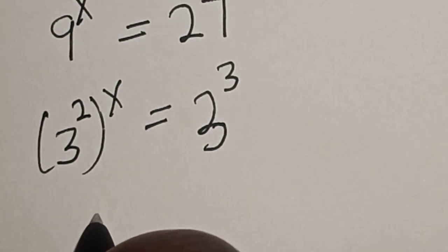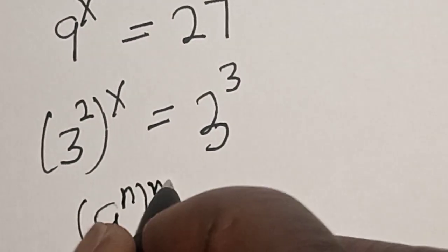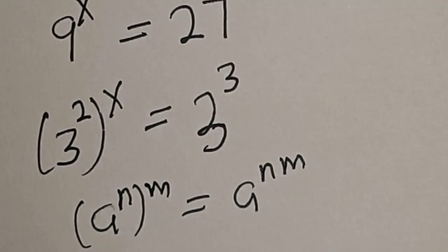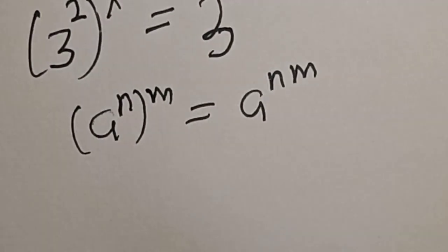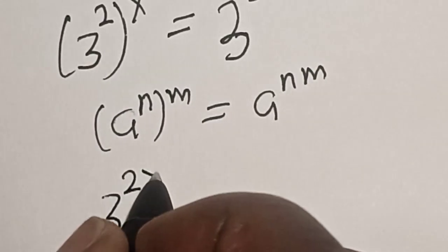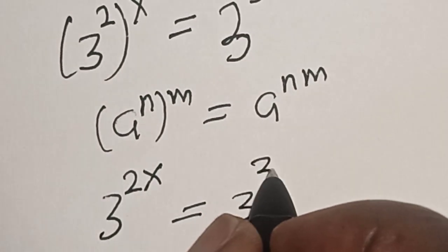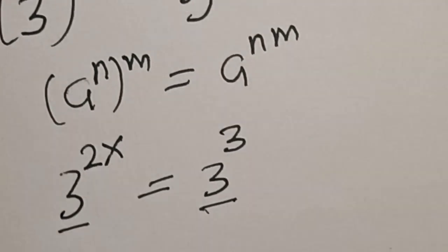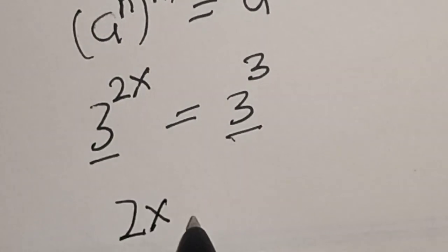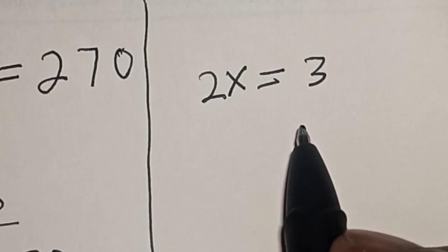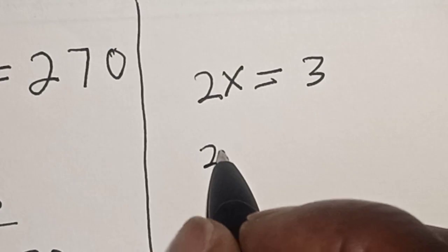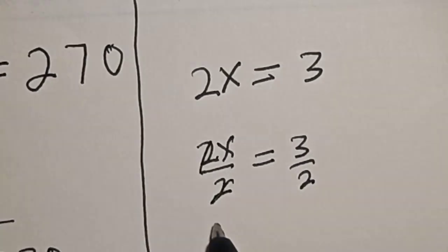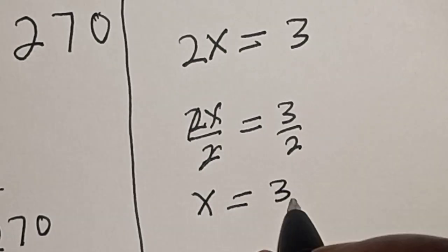9 raised to power s can be expressed as 3 squared raised to power s, which equals 3 raised to power 3, since 27 equals 3 cubed. Using the rule that a raised to power n, raised to power m, equals a raised to power n times m, we get 3 raised to power 2s equals 3 raised to power 3. Since they have the same base, 2s equals 3. Dividing both sides by 2 gives s equals 3 over 2.